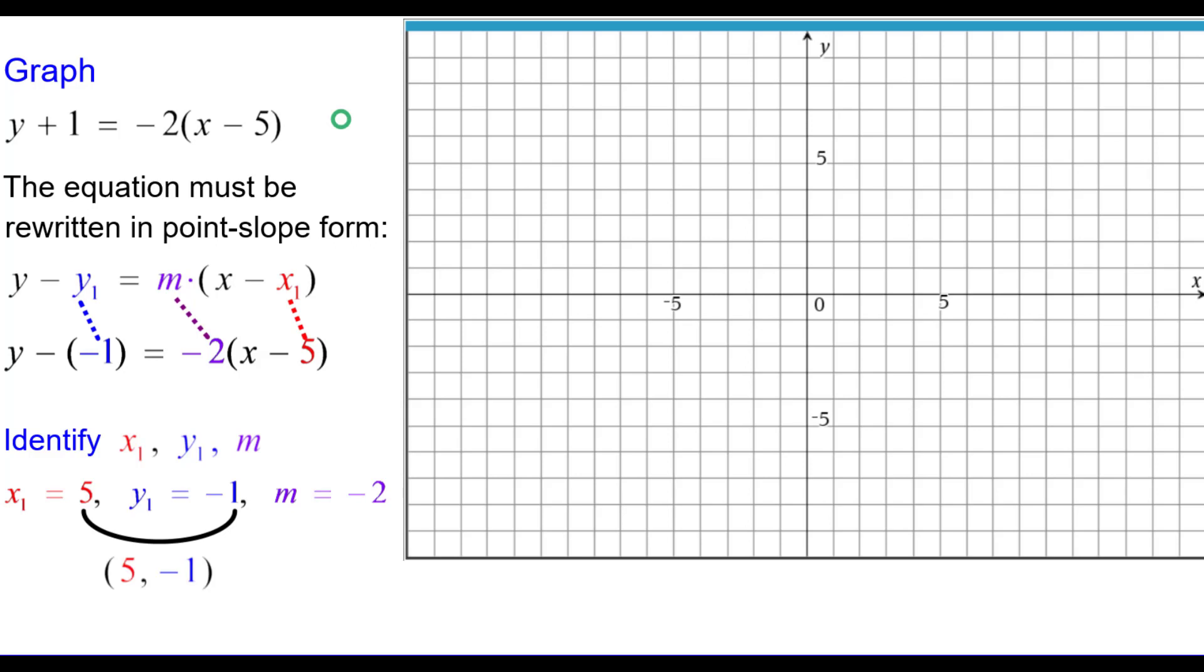We plot the point first, 5, negative 1, and using the slope we can find at least 2 more points. Thinking of negative 2 as negative 2 divided by positive 1, that would be a change in y of negative 2 down to change in x of positive 1, right 1 and we plot that point.